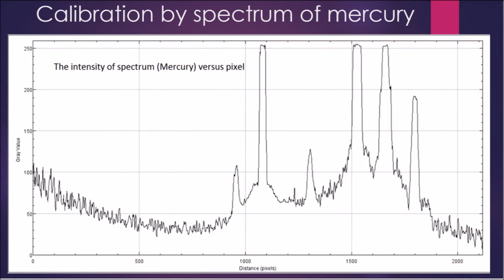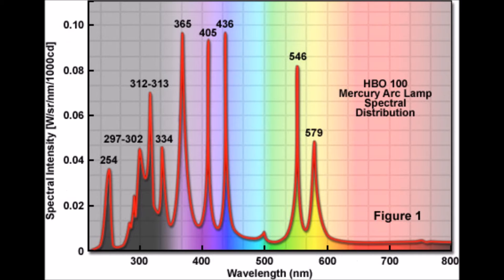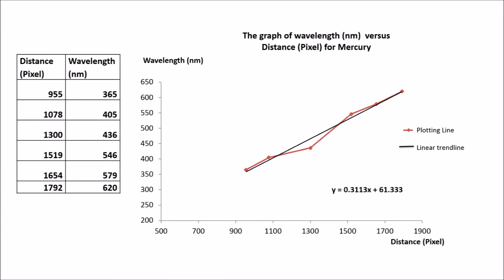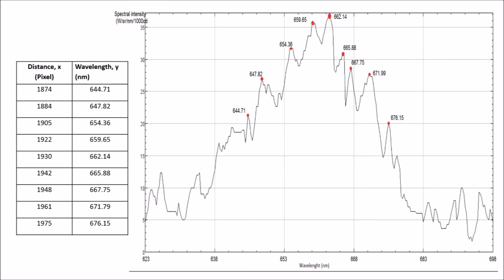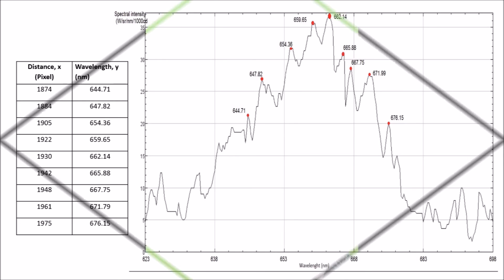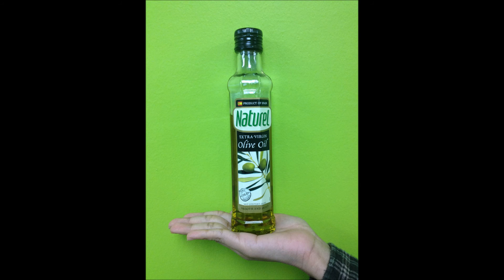From the analysis of the graph using ImageJ, we calibrate the data with the standard value of wavelength of the spectrum of mercury. We then analyze the spectrum of olive oil by taking several readings of peak values. These values are substituted into the equation Y equals 0.3113X plus 61.333. The wavelength of the selected peak values are now obtained, giving the signature of olive oil manufactured by Natural Brand.